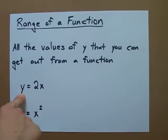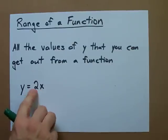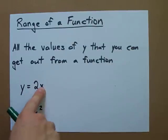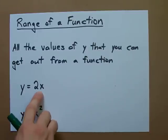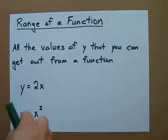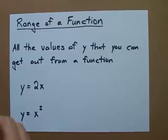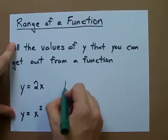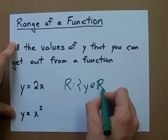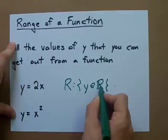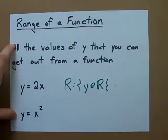So what can y be? If x was negative, y is still negative — just double what it was. If x was zero, it's double zero, which is still zero. If x is positive, it's still positive. X can be anything and y can be anything as well. So we say that the range of this function is that y can be any real number — y is an element of the real numbers.